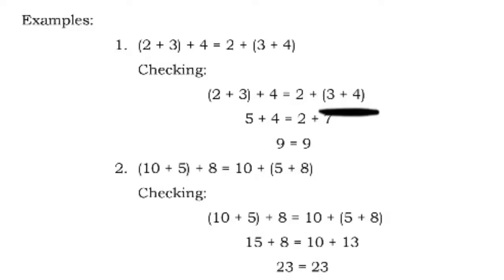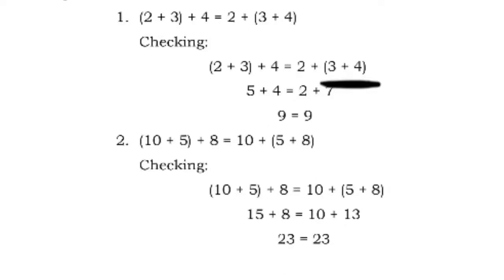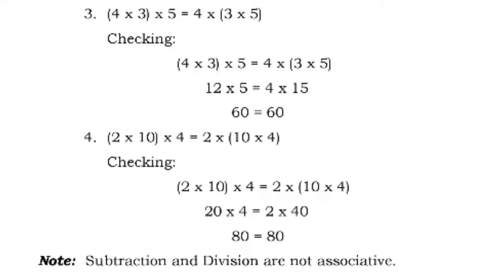Another example: the quantity of 10 plus 5 plus 8 equals 10 plus the quantity of 5 plus 8. The quantity of 10 plus 5 is 15, plus 8 equals 23. The quantity of 5 plus 8 is 13, plus 10 is also 23. For multiplication: the quantity of 4 times 3, times 5, equals 4 times the quantity of 3 times 5. So 4 times 3 is 12, times 5 equals 60; and 3 times 5 is 15, times 4 also equals 60. They are equal.